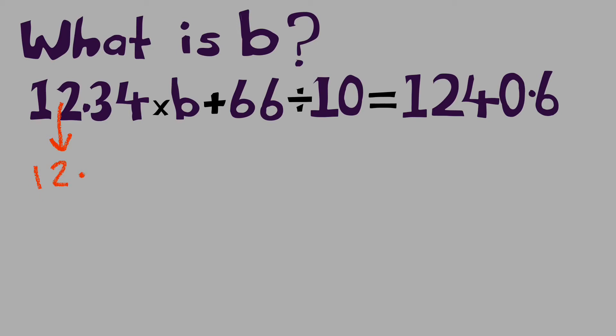What is b in this question? Well here we have 12.34, we're going to multiply by something, a mystery b, and then we're going to add 66 divided by 10, well that equals 6.6, so we know that. Right now that's going to all equal 1240.6.